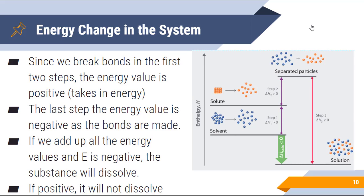In the last step, the energy value is negative as bonds are being made, thus energy is being released back into the surroundings. If we add up all the energy values and delta E is negative, the substance will dissolve, meaning that it's releasing energy. If this delta E is positive, then odds are it will not dissolve. So that's how we determine if a particular solute is going to dissolve in a given solvent. We have to look at the change in energy values for the three steps that were mentioned previously.